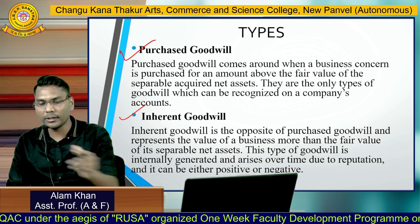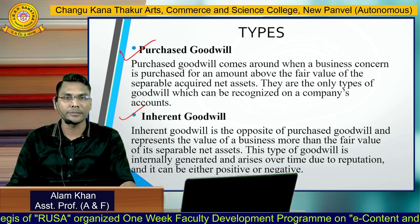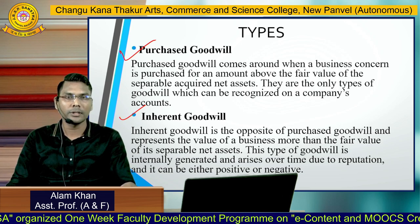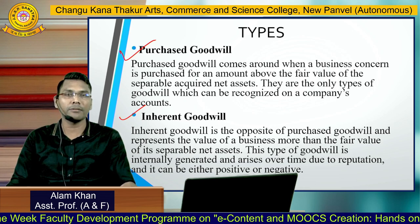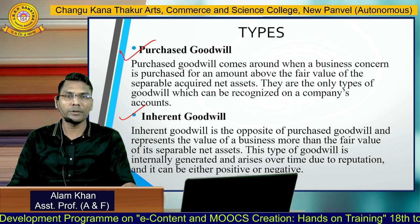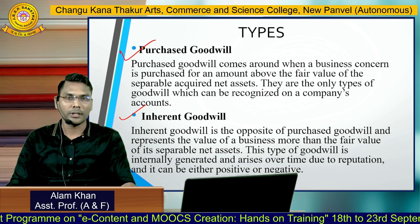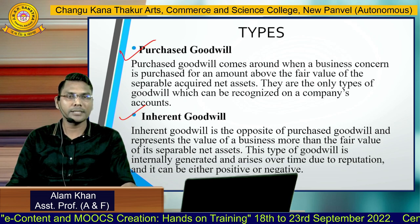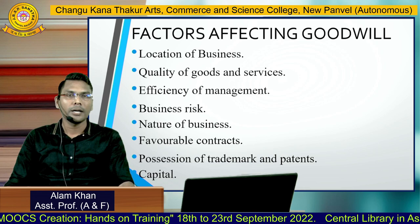The second type is inherent goodwill. Inherent goodwill is the opposite of purchased goodwill and represents the value of the business in excess of the fair value of its separable net assets. This type of goodwill is internally generated — for example, through admission of a partner or retirement of a partner — and arises over time due to reputation.